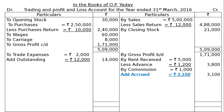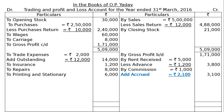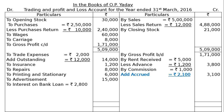Then the next items on the debit side: to insurance Rs. 1,200, to repairs Rs. 8,000, to printing and stationery Rs. 6,000, to advertisement Rs. 15,000, to interest on bank loan Rs. 2,800. It is given Rs. 2,800 on the debit side as interest on bank loan. But we should find out what the total interest due is.